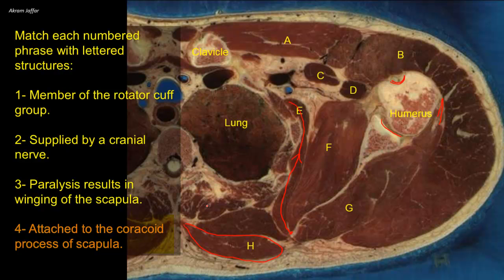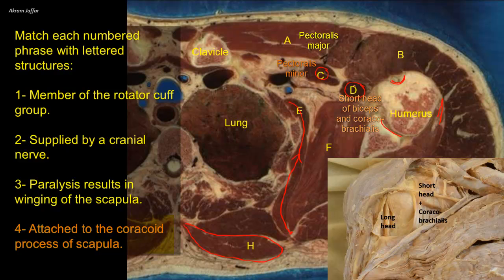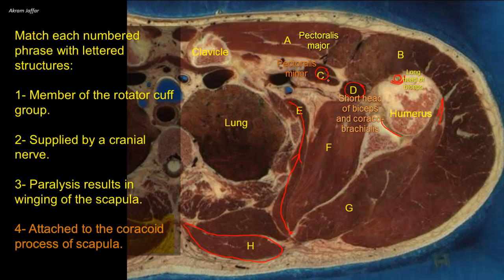Attached to the coracoid process: the coracoid process is not shown in this section, but the muscles attached to it are — two of them are visible here. One is pectoralis minor, which is narrow, small, and located deep to pectoralis major; this is pectoralis major attached to the clavicle at its clavicular head, and pectoralis minor lies deep to it on its way to the coracoid process. Here is the bulk of the short head of biceps and coracobrachialis. The long head of biceps tendon is located in the intertubercular groove of the humerus. D is the short head of biceps and coracobrachialis — the three muscles in C and D are all attached to the coracoid process of the scapula.